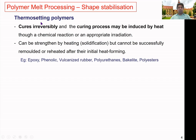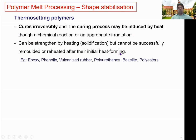Thermosetting polymers cannot be remelted and reshaped once formed, because the curing reaction is irreversible. The curing of thermosets may be induced by heat through a chemical reaction or appropriate irradiation. Examples of thermoset polymers include epoxy, phenolic, vulcanized rubber, polyurethanes, Bakelite, and polyesters.